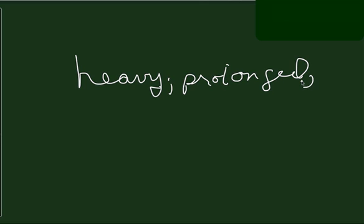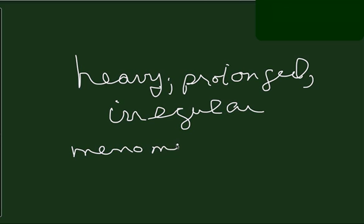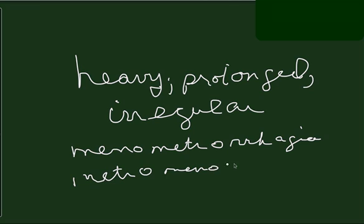So if bleeding is heavy, prolonged, and irregular, the term is menometrorrhagia, or you can call it metromenorrhagia. Either term is acceptable.